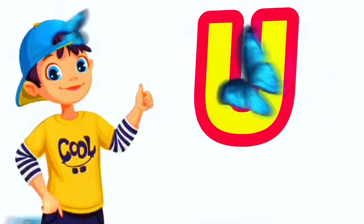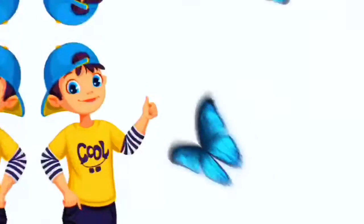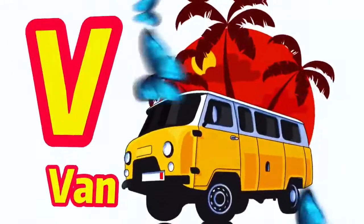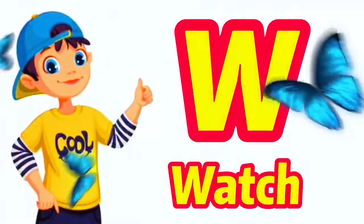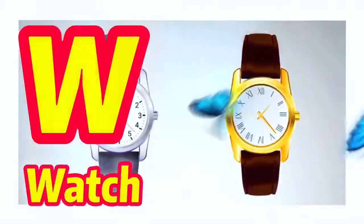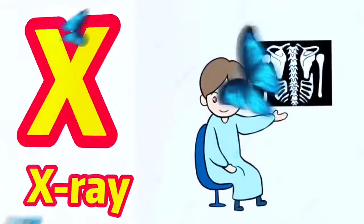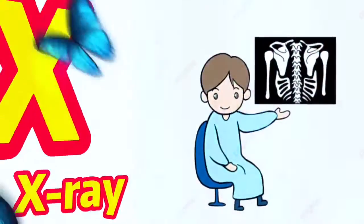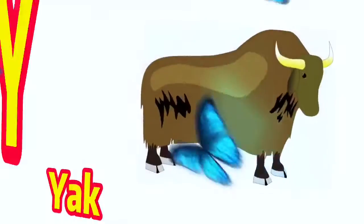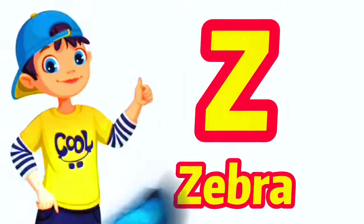U for umbrella, V for well, W for vhach, X for x-ray, Y for yak, Z for zebra.